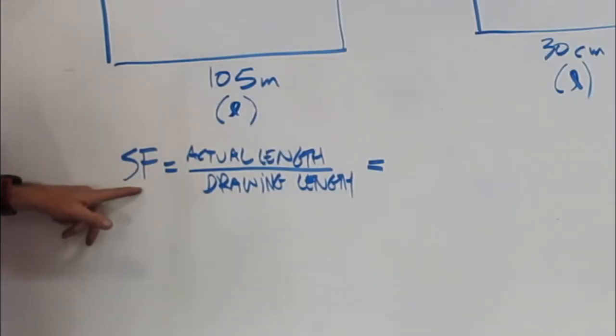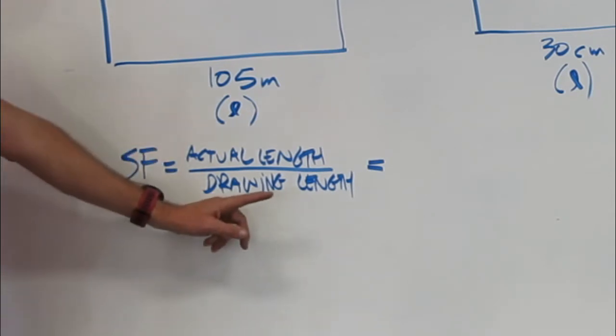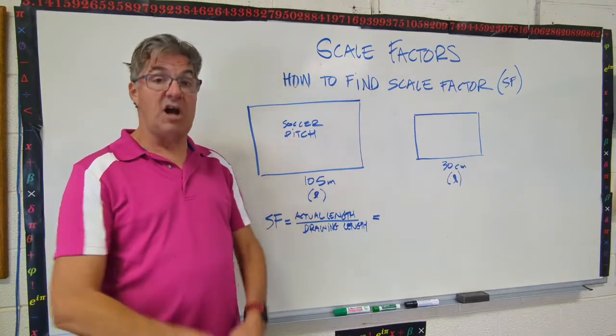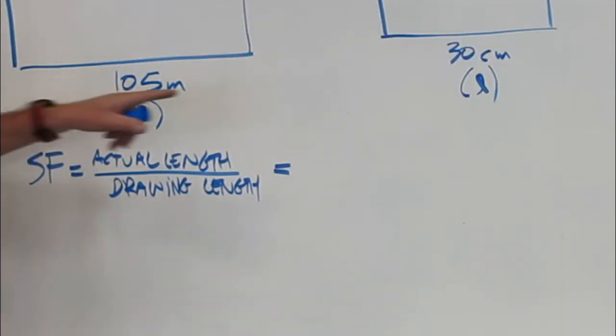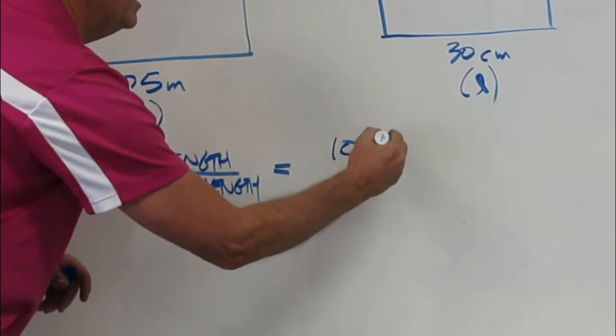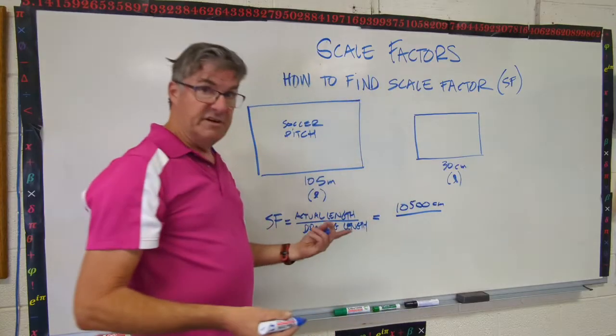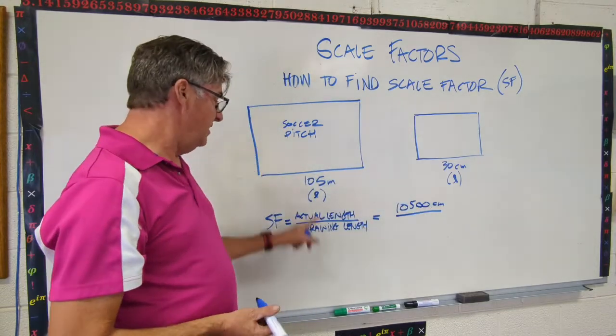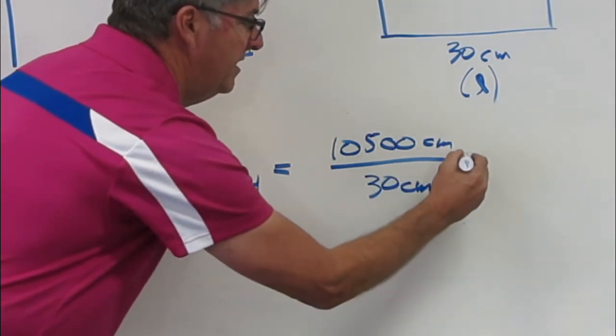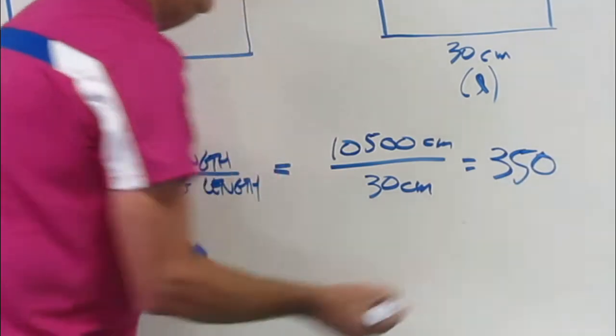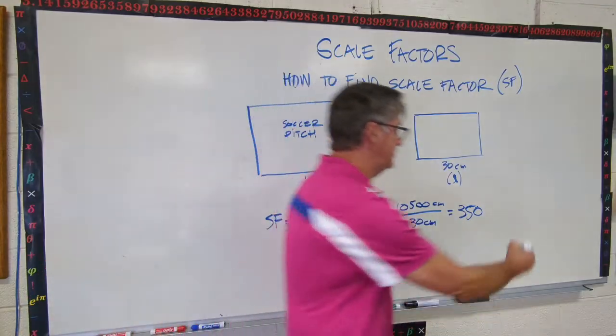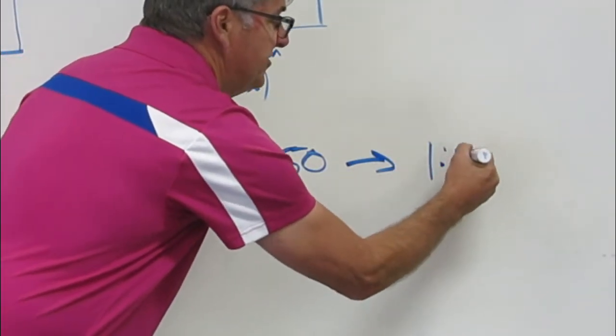Scale factor, SF, is the actual length divided by the drawing length. So go ahead and pause the video and do that calculation and come up with your scale factor. Okay, let's see how you did. So first off, the actual length is 105 meters. And our drawing length is 30 centimeters. You have to put them in the same units. That's super important. So I'm going to convert that to centimeters. So 105 meters is 10,500 centimeters. To go from meters to centimeters, you just add two zeros or multiply by a hundred. And then my drawing length is 30 centimeters. Pull out your handy dandy calculator and do that calculation. So once you've done that calculation, it's 350.